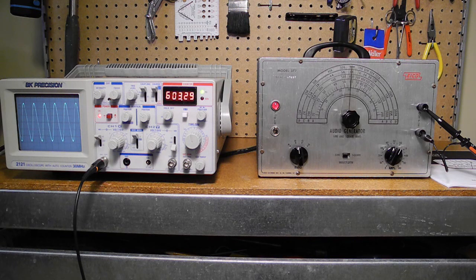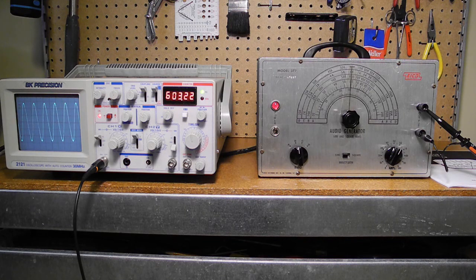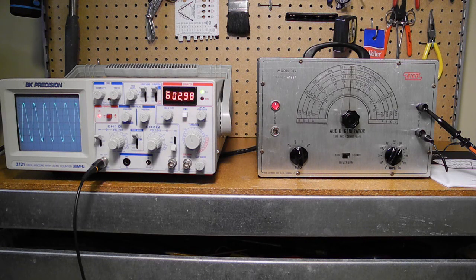Like most EICO equipment, the model 377 was a good solid piece of test equipment. In my opinion, EICO equipment was never up to the same quality as Heathkit when it came to features, appearance and assembly manuals. These units are pretty common and EICO undoubtedly sold a lot of them over the years.